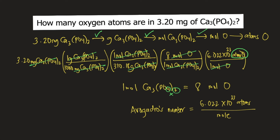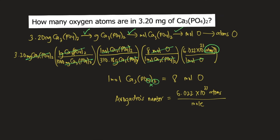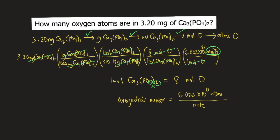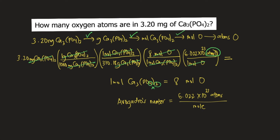The final step is to solve for everything — plug this into your calculator. The answer is equal to 4.97 times 10 raised to 19 oxygen atoms, and this is the answer to the question.